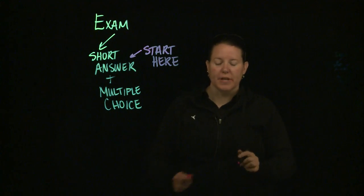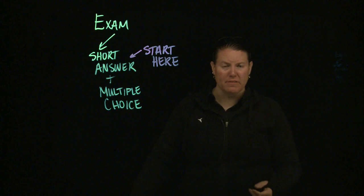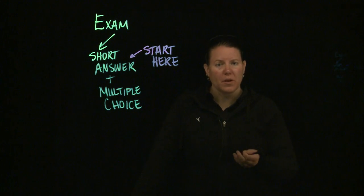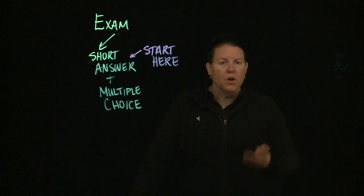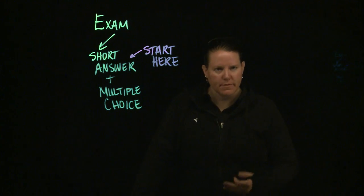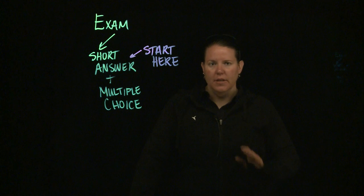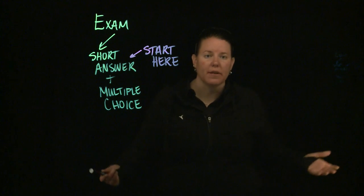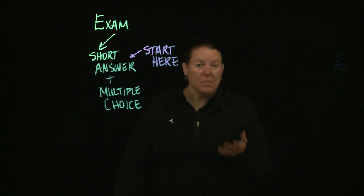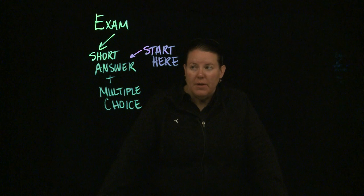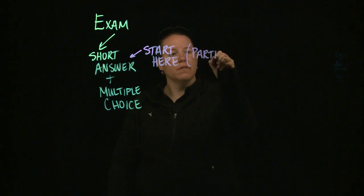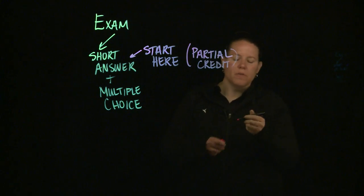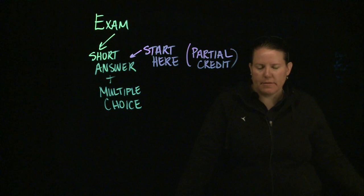For short answer you should put something down for every question. Just put something down even if you have no idea what the question is asking. You should be putting down I'm not sure what this question is asking but I do know these things that I think might be related to it. That's how you approach short answer. You need to put down something because if you put down nothing we can give you no credit. But if you put down something, something might apply and we might be able to give you some credit. Because these short answer also are almost always partial credit, and if they're partial credit, that means we can give you some of the points for answering it partially right.